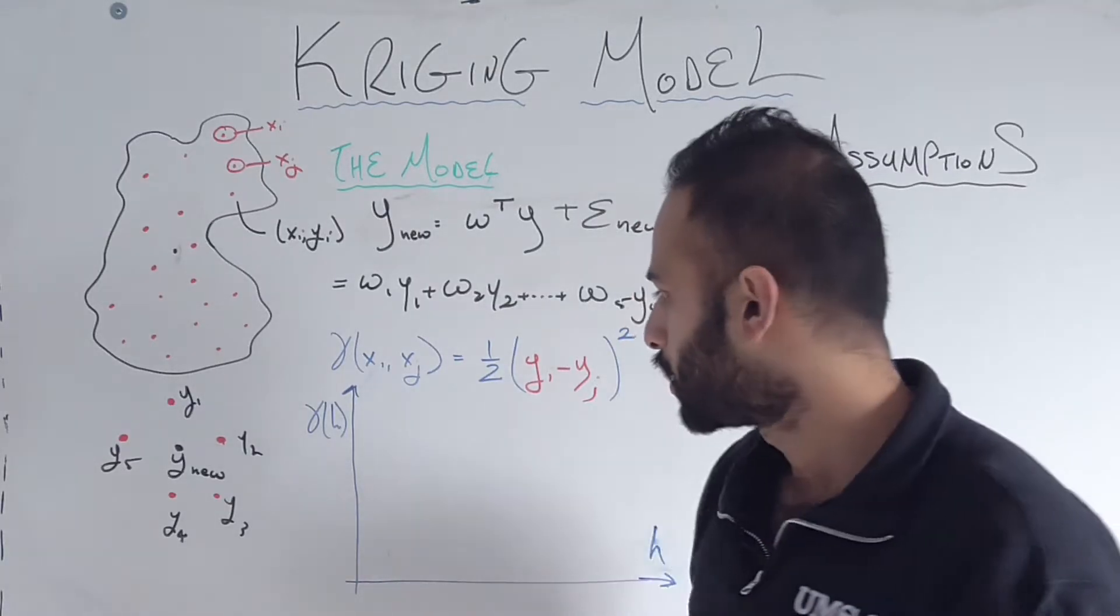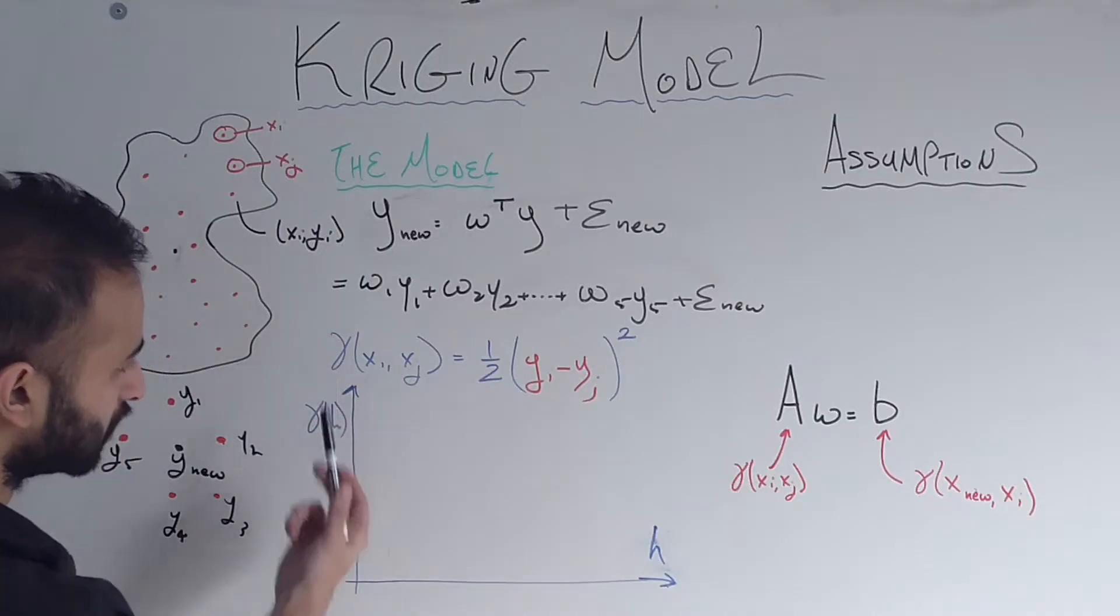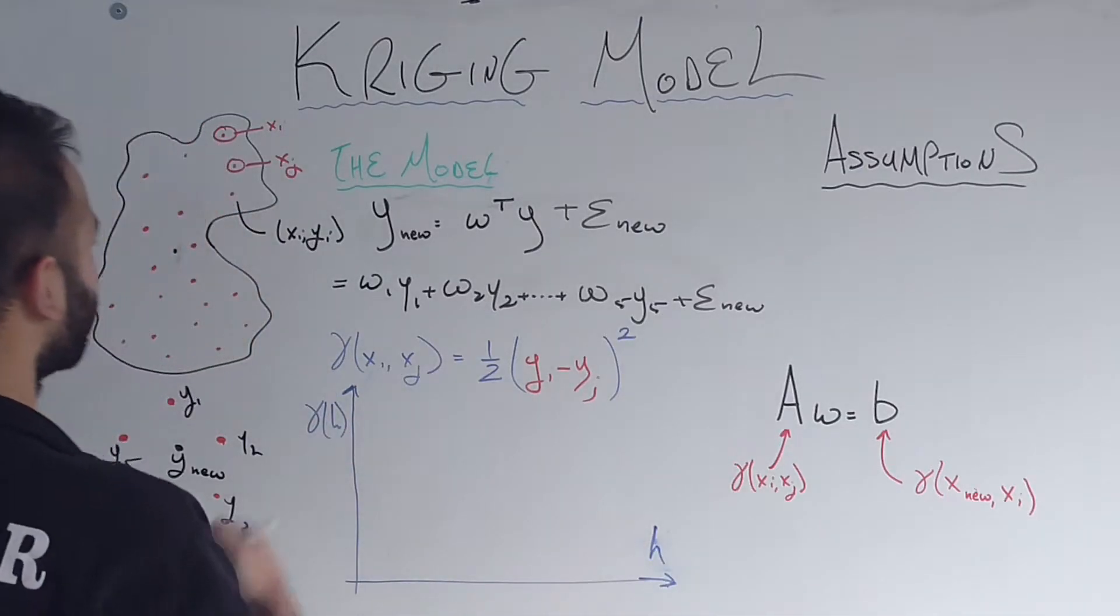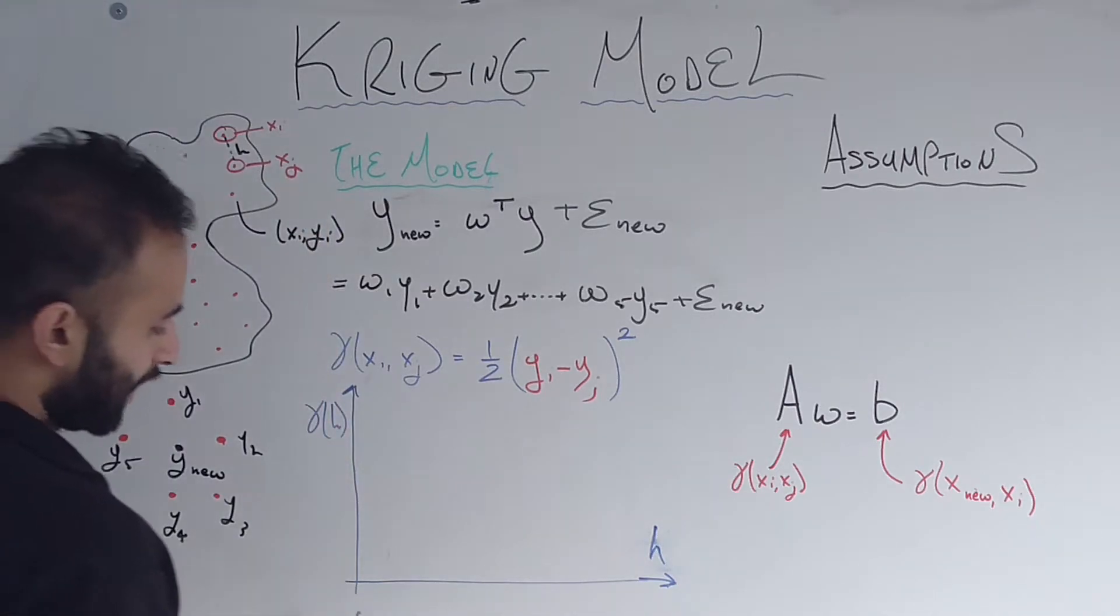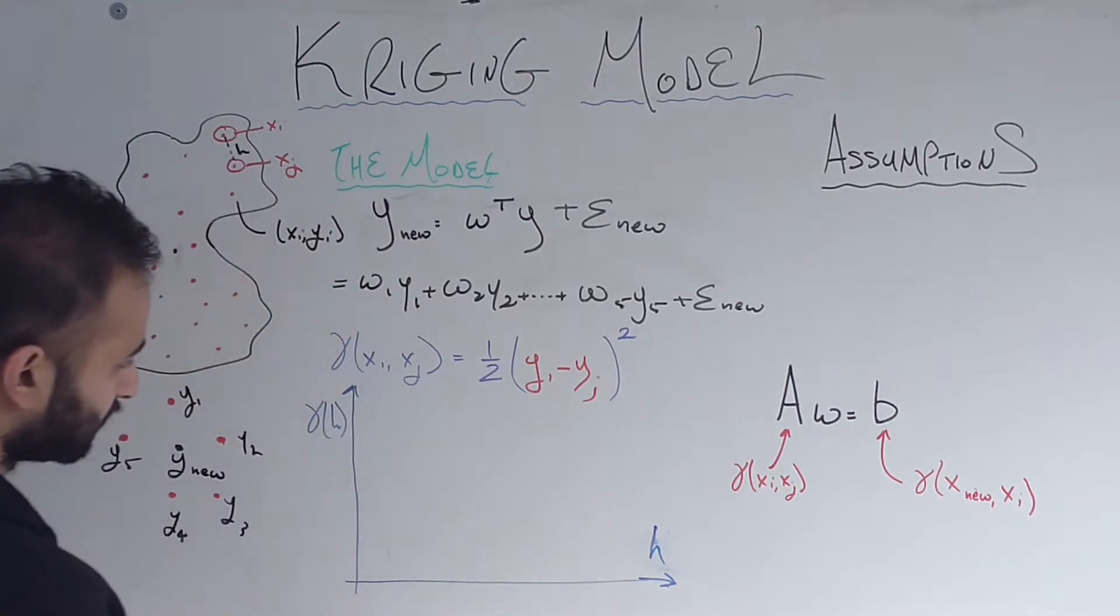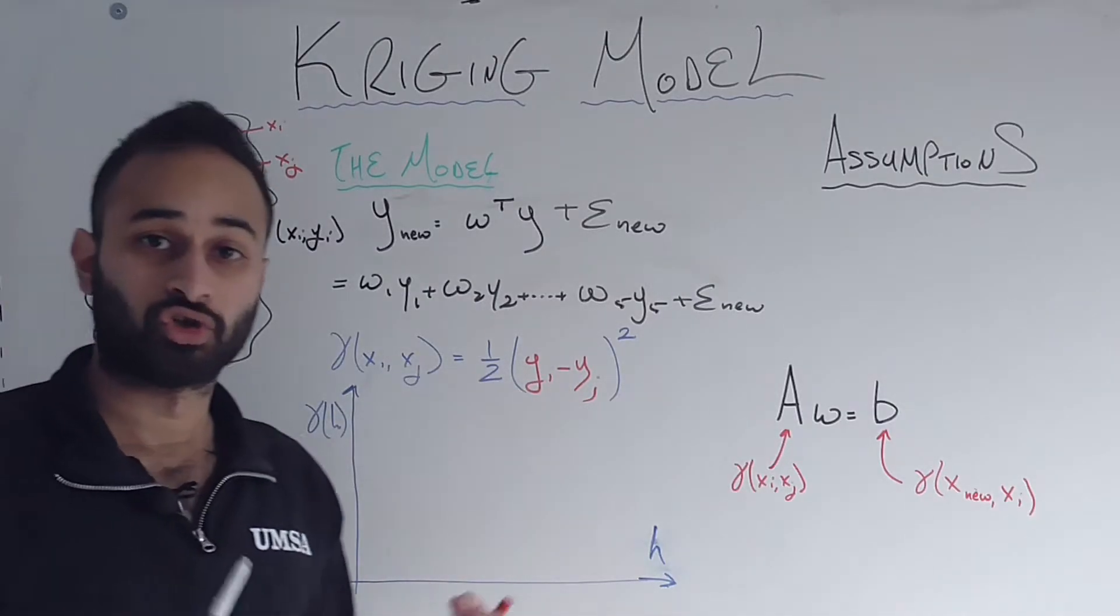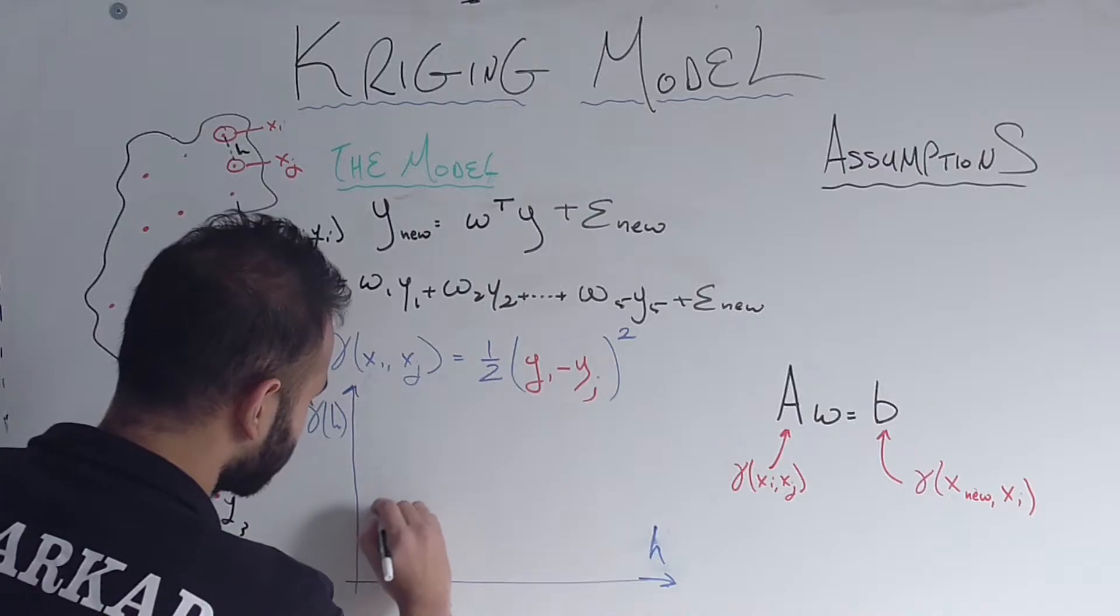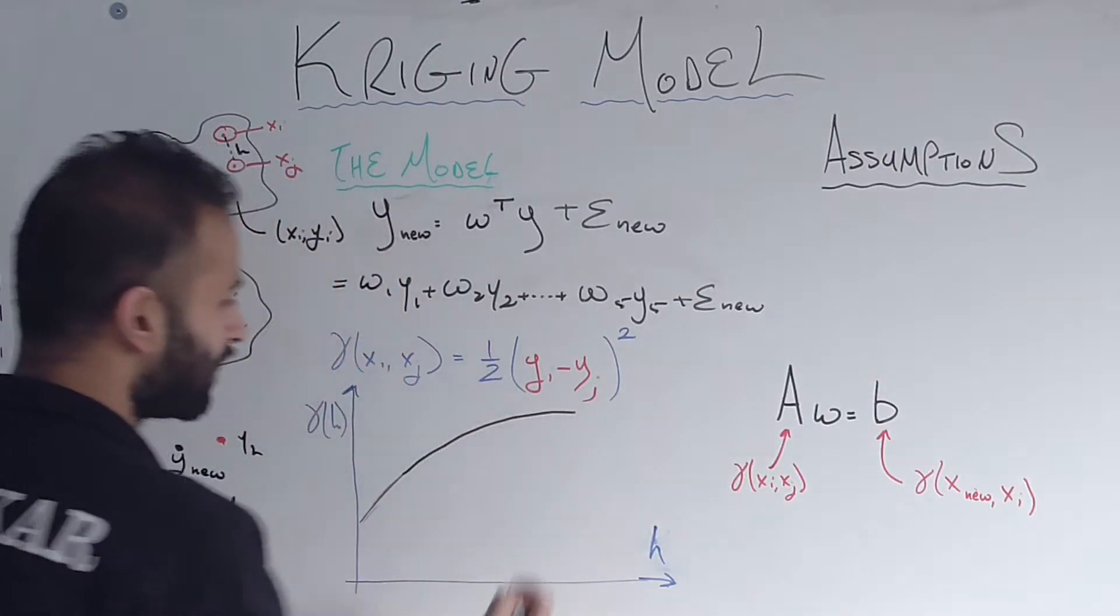So using those intuitions, let's draw a graph of what we expect h versus gamma of h to look like, and h is going to be the distance between two points. So as the distance goes up, we expect that the gamma, or this function of the difference in elevations, should also go up. So maybe it starts like this, it's going up, it's going up, but we expect it at some point to plateau off.